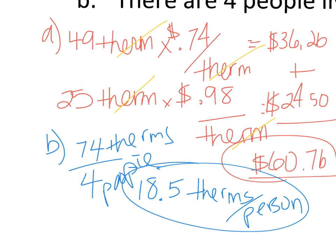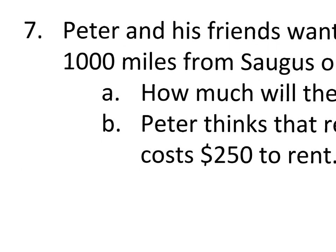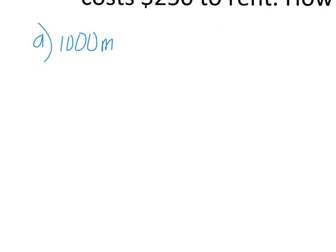All right, going on to number seven. Peter and his friends want to make a road trip to Yellowstone National Park this summer. Yellowstone is 1000 miles from Saugus one way. His car gets 20 miles per gallon and gas costs $4 a gallon. How much will the gasoline cost round trip? All right, so this is kind of a long problem. Here we go. So he wants to go 1000 miles. But that's one way. So we have to multiply that by two for round trip.